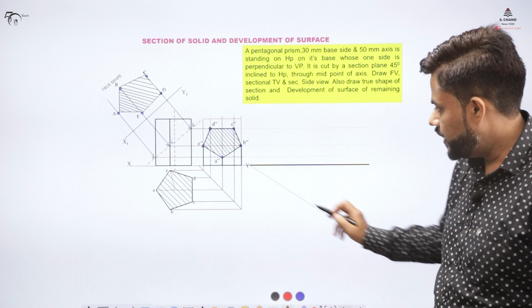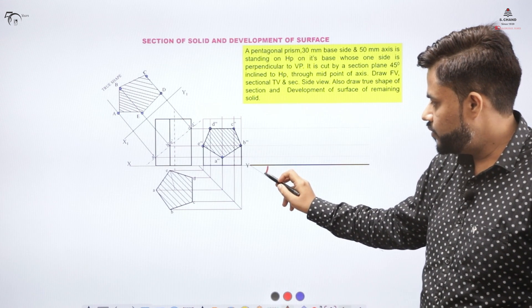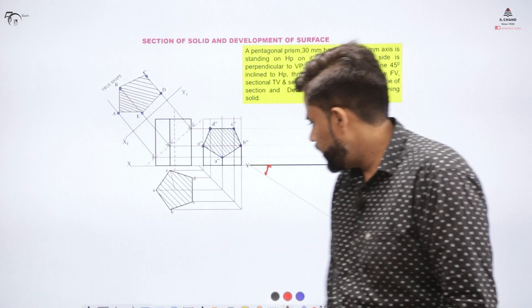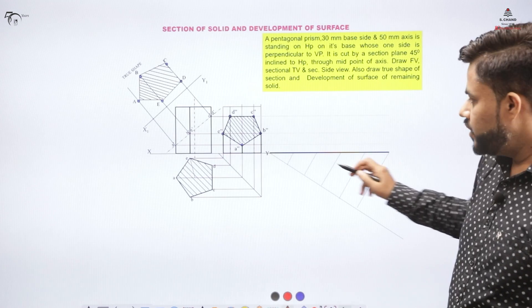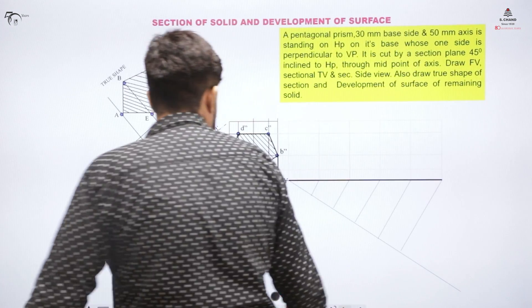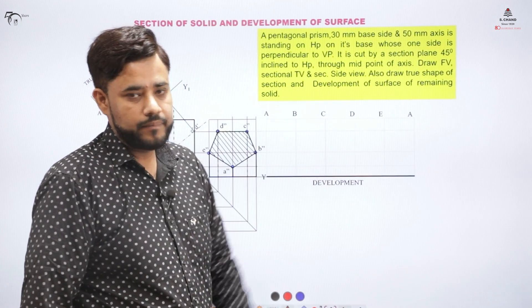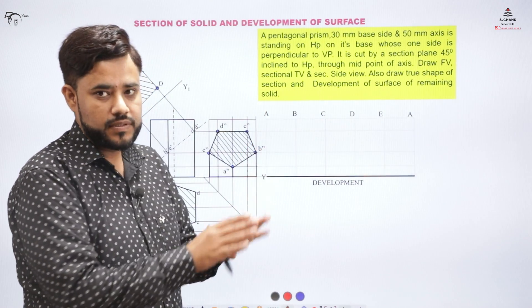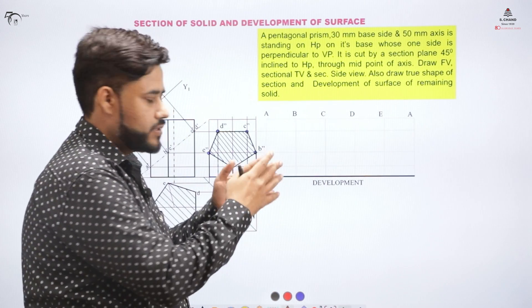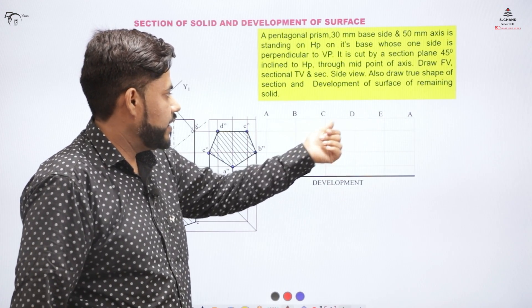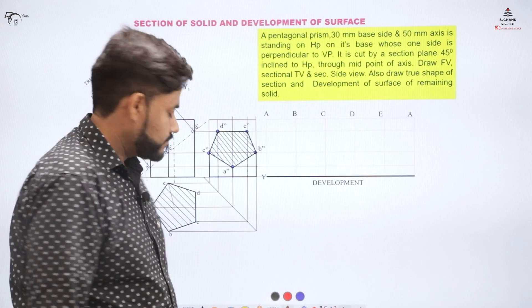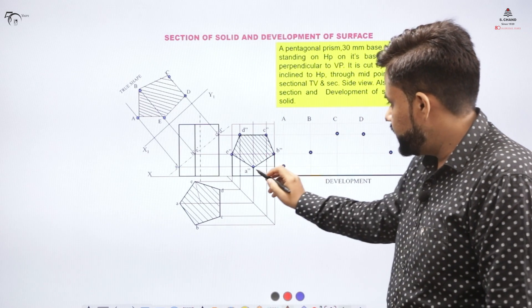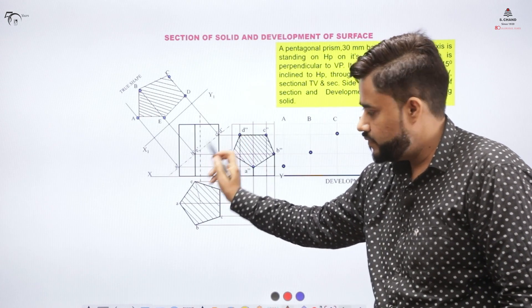To divide the line into 5 equal parts, draw a second line inclined at an acute angle to the base, divide that into 5 equal parts, and draw parallel lines back to get the division points. Label the points a, b, c, d, e, and a again — the repeated 'a' is because the two ends join when the shape is closed.